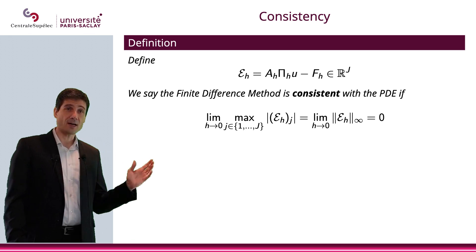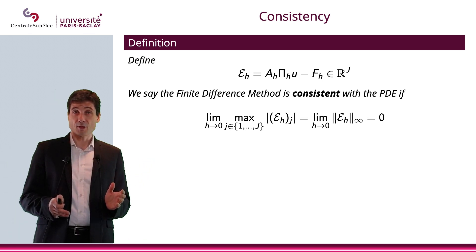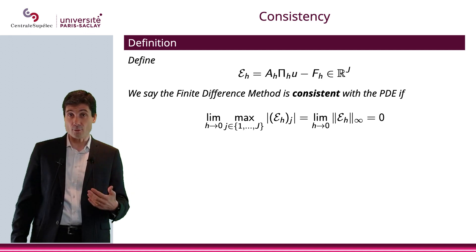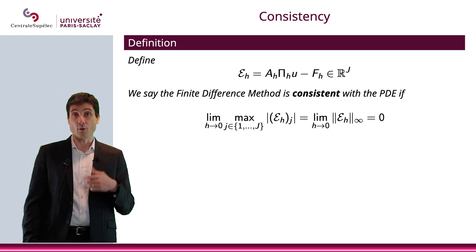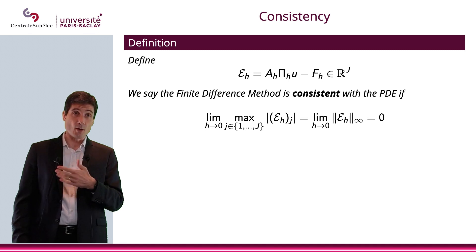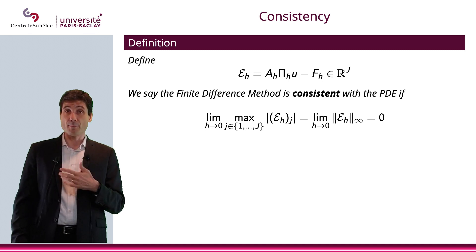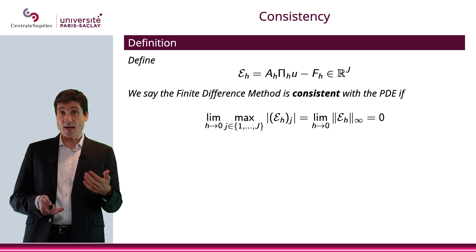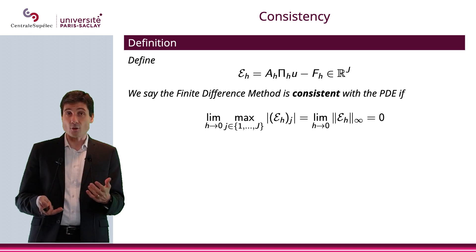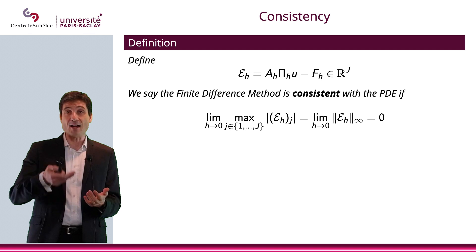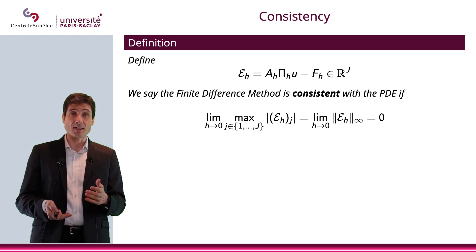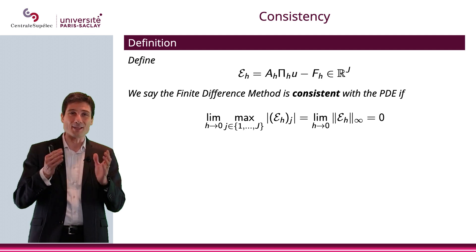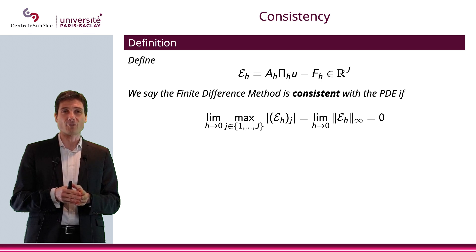Let's talk about consistency. Let me define curly e_h as the matrix A_h multiplied by the vector π_h(u) — which is the vector composed of u(x_1) all the way to u(x_j), all the values of u on the grid — minus f_h, the vector of all values of f on the grid. We will say that the finite difference method is consistent with the PDE if the limit of the infinity norm of curly e_h goes to zero as h goes to zero.